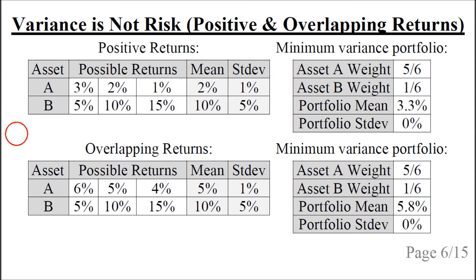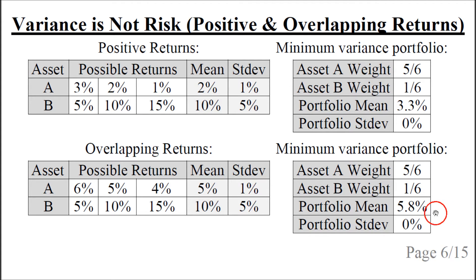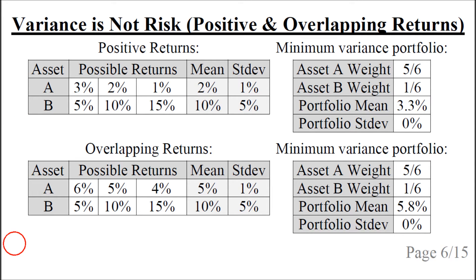We can consider two variations of the previous example. In the first variation, asset A has possible returns 3, 2, or 1 percent, and the minimum variance portfolio has the same weights as before, but now all outcomes of the portfolio are 3.3 percent. In the other variation with slightly overlapping returns, asset A can have 6%, 5%, or 4% and asset B may have 5%, 10%, or 15%. The portfolio now has a mean of 5.8% and standard deviation of zero. In both cases a complete investment in asset B would be better, so clearly Markowitz optimization does not do what we want it to do.